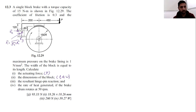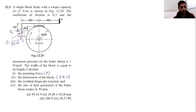The expected answers are: actuating force = 93.33 N, block dimensions = 18.26 mm × 18.26 mm, resultant hinge pin reaction = 260 N, and rate of heat generation = 39.27 W.